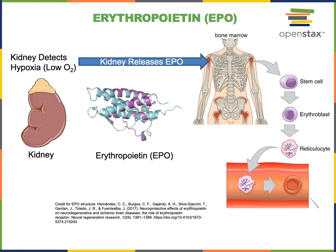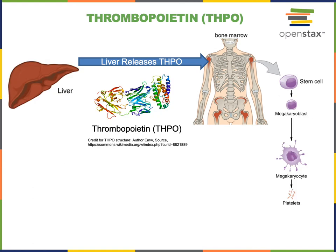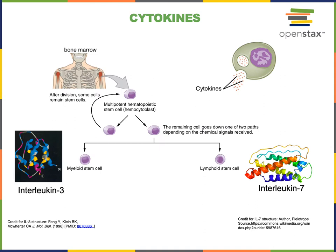Another hormone regulating hematopoiesis is thrombopoietin. Thrombopoietin, or THPO, is produced by the liver and stimulates the production of thrombocytes in the red bone marrow. Cytokines are a group of other hormones and paracrine signaling proteins that have important functions in regulating the production of leukocytes and also regulating the functions of leukocytes. These cytokines are all glycoproteins secreted by a wide variety of cells throughout the body, and many are secreted by leukocytes.